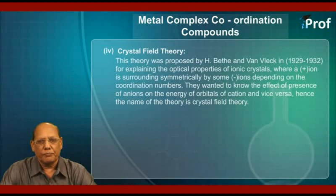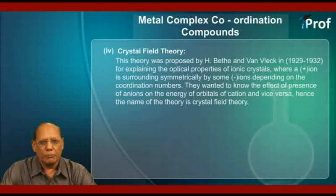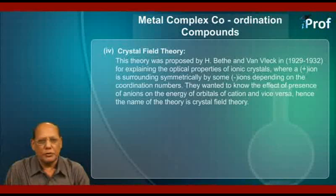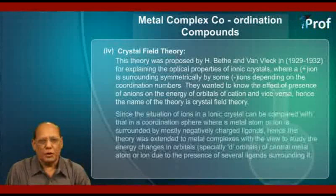Fourth, Crystal Field Theory. This theory was proposed by H. Beth and Van Wack during 1929–1932 for explaining the optical properties of ionic crystals, where a positive ion is surrounded symmetrically by some negative ions, depending on the coordination numbers. They wanted to know the effect of the presence of ions on the energy of orbitals of the cation, and vice versa. Hence, the name of the theory is Crystal Field Theory.